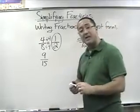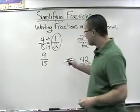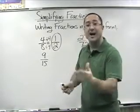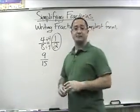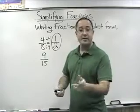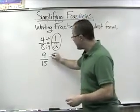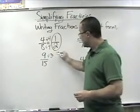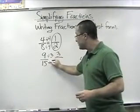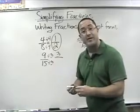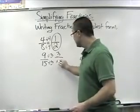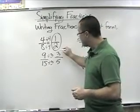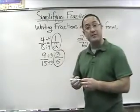Let's take the next one — nine fifteenths. What is the biggest number I could divide both 9 and 15 by? That's 3. Nine divided by 3 is 3, and fifteen divided by 3 is 5. So nine fifteenths in simplest form is three fifths.